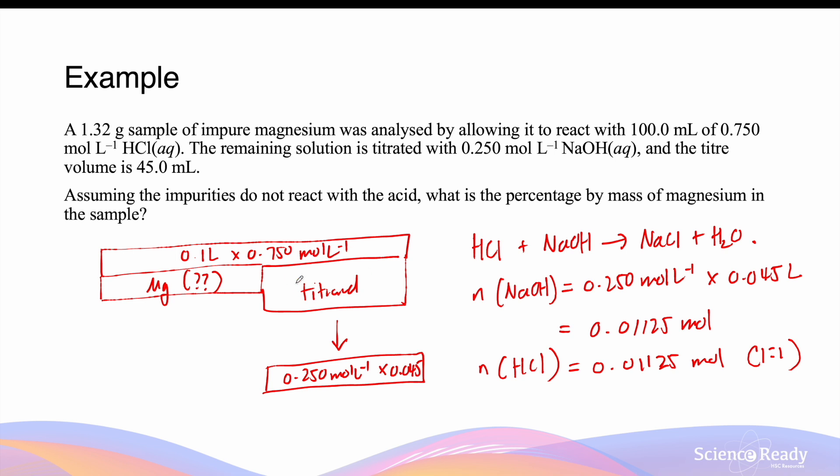Now remember, only the amount of hydrochloric acid left over, which is called the titrant, was reacted with the sodium hydroxide. So this number here is the excess amount of HCl.